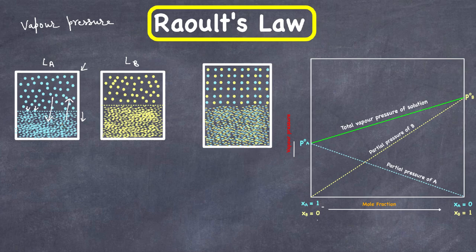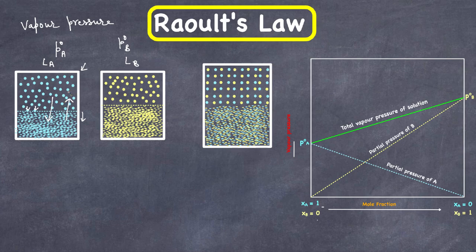There will be equilibrium established between liquid and vapor phases. The pressure exerted by these vapors at equilibrium is called vapor pressure, and we denote it by P°A for liquid A and P°B for liquid B. The pressure exerted by vapors above the liquid surface in equilibrium with the liquid at a given temperature is called vapor pressure. Vapor pressure depends on the nature of the liquid and also on temperature, so it can go up and down with a change in temperature.